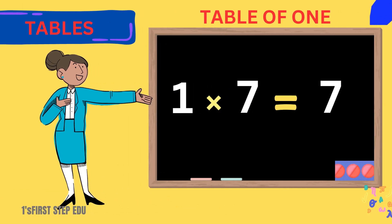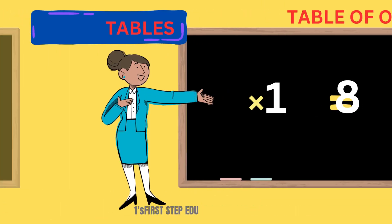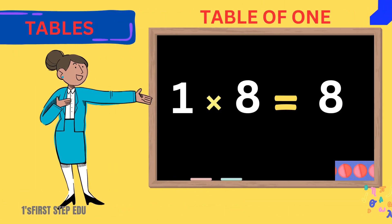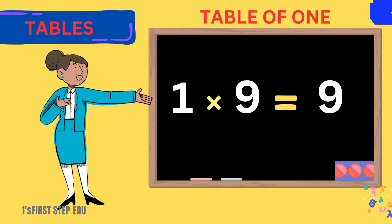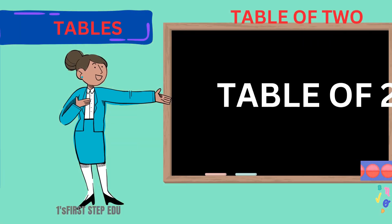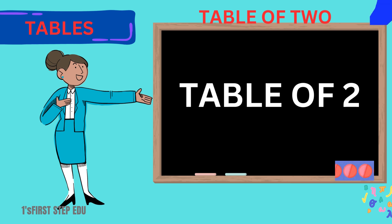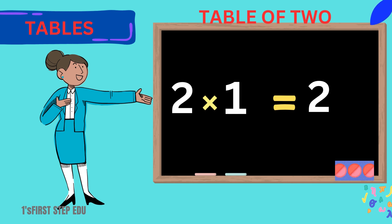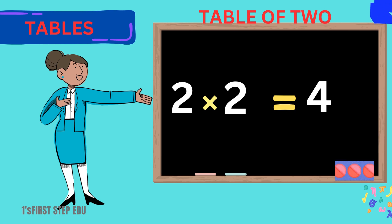1 seven is 7. 1 seven is 7. 1 eight is 8. 1 eight is 8. 1 nine is 9. 1 nine is 9. 1 ten is 10. 1 ten is 10. Table of 2. 2 ones are 2. 2 ones are 2.